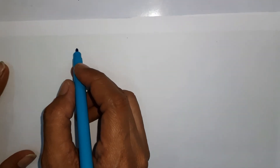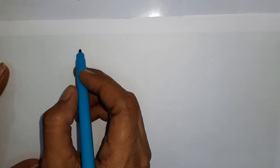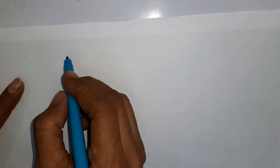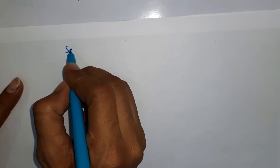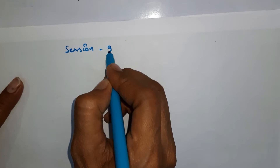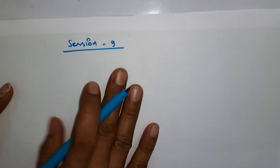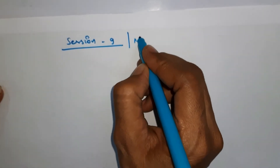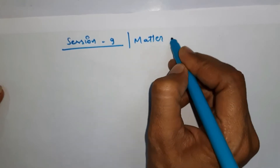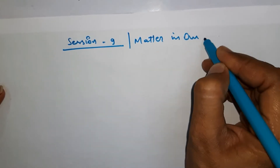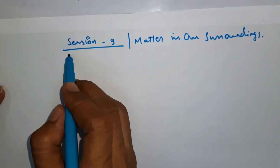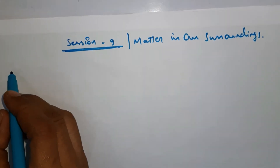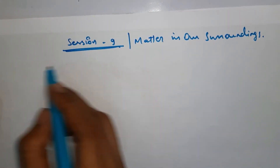Hello friends, this is session number nine, and it is regarding evaporation. We are doing session nine on the topic 'Matter in Our Surroundings.' This is our last topic of this chapter, so let's try to understand what evaporation is.